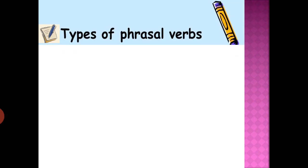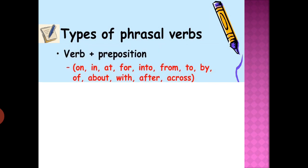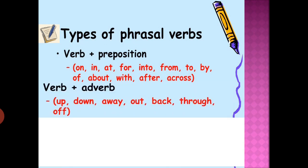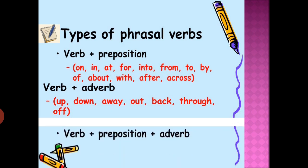The types of phrasal verbs depend on what combination the main verb uses. It may come with a preposition such as on, in, at, for, into, from, to, or by; or with an adverb such as up, down, away, out, back, through, or off; or with a combination of both a preposition and an adverb.